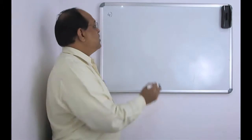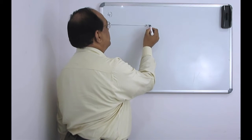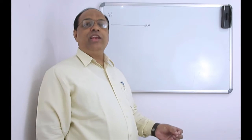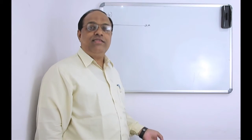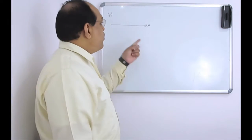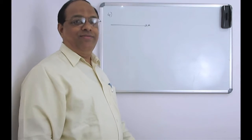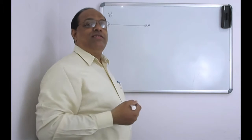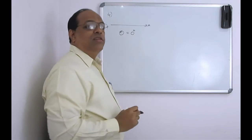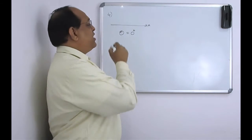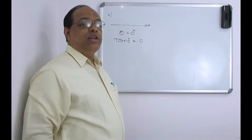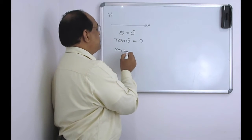If you see the slope of the x-axis: since slope is defined as tan theta, and the x-axis makes an angle of 0 degrees with itself, the slope of the x-axis is tan 0, which equals 0. That means the slope of the x-axis is 0.